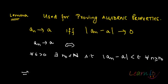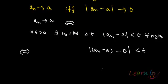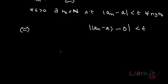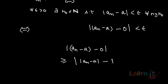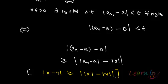Everything remains the same and I can write a_n minus a minus 0, which will still be less than epsilon — I'm just adding minus 0. Now this term |a_n - a - 0| is always greater than or equal to ||a_n - a| - |0|| because of the property of modulus, which says that |x - y| is greater than or equal to ||x| - |y||.